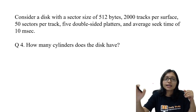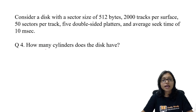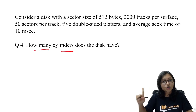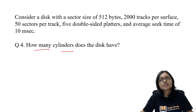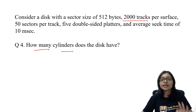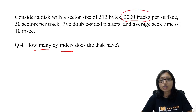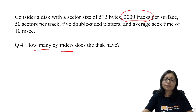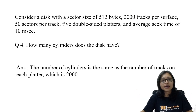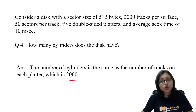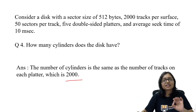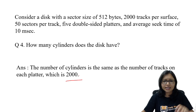Now the next question: how many cylinders are there? I told you, the cylinder means the number of tracks, nothing else. There are 2000 tracks, so the number of cylinders is also 2000. That is very easy.